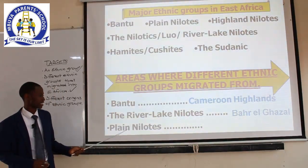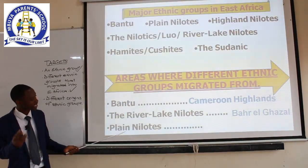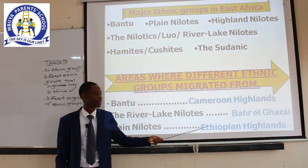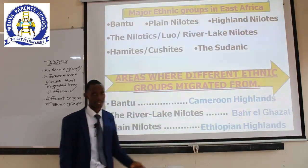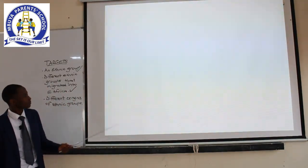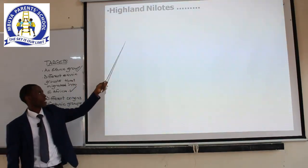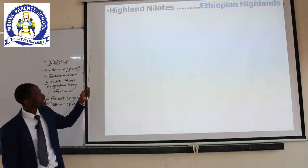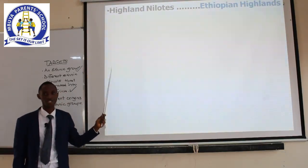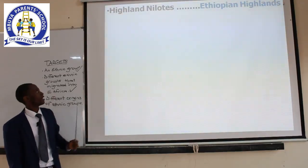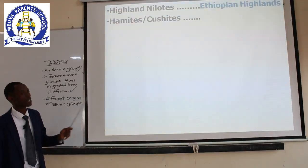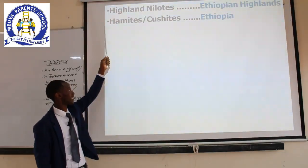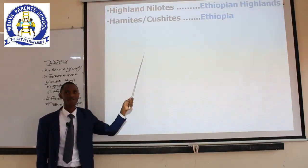Third: we have the Plain Nilotics. As we said, they get their name from the area where they settled — the plain areas. They migrated from the Ethiopian Highlands, from the country called Ethiopia, but specifically from highland areas. Fourth: the Highland Nilotics also migrated from the Ethiopian Highlands. They are similar to the Plain Nilotics — they have the same origin, that is the Ethiopian Highlands.